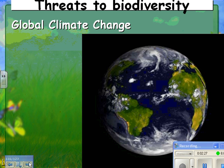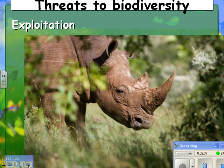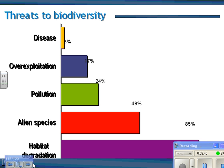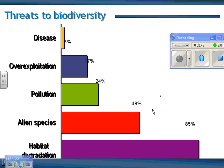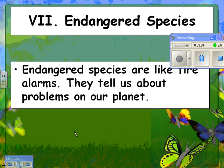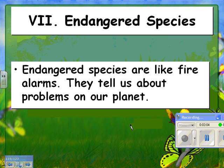Another threat to biodiversity is global climate change — as the planet warms up, some species can't adapt quickly enough and die out. Another threat is exploitation, such as killing an animal just for its horn or a particular body part. Looking at this graph, habitat degradation is the biggest threat to biodiversity, followed by invasive species, then pollution, over-exploitation, and finally disease.